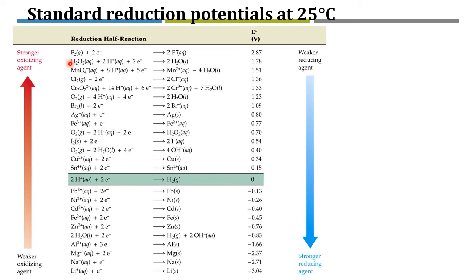A substance that receives electrons is called an oxidizing agent. So oxidizing agents receive electrons and produce reducing agents. In this table, the highest value of the reduction reaction is on top, meaning that substance is the strongest oxidizing agent. In the opposite direction, at the bottom, lithium would be the strongest reducing agent.